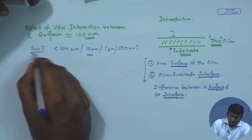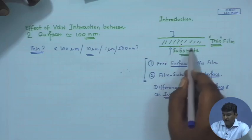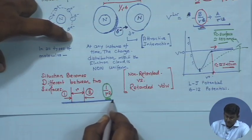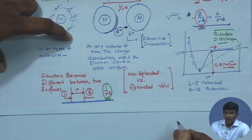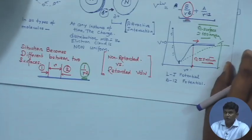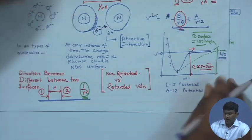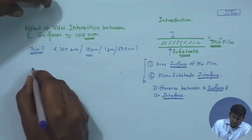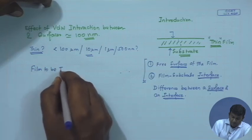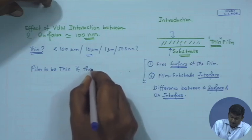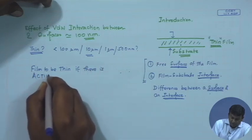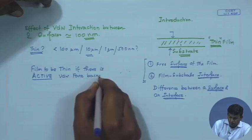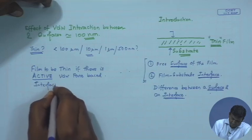Coming back to the question of what is thin: a thin film has two boundaries. From our previous discussion, when the separation distance between two surfaces is less than about 100 nanometers there is active van der Waals interaction, because beyond the 100 nanometer limit there is no interaction. That sets the tone for defining what a thin film is in our context: we will consider a film to be thin if there is active van der Waals force-based interfacial interaction between the two surfaces or interfaces.